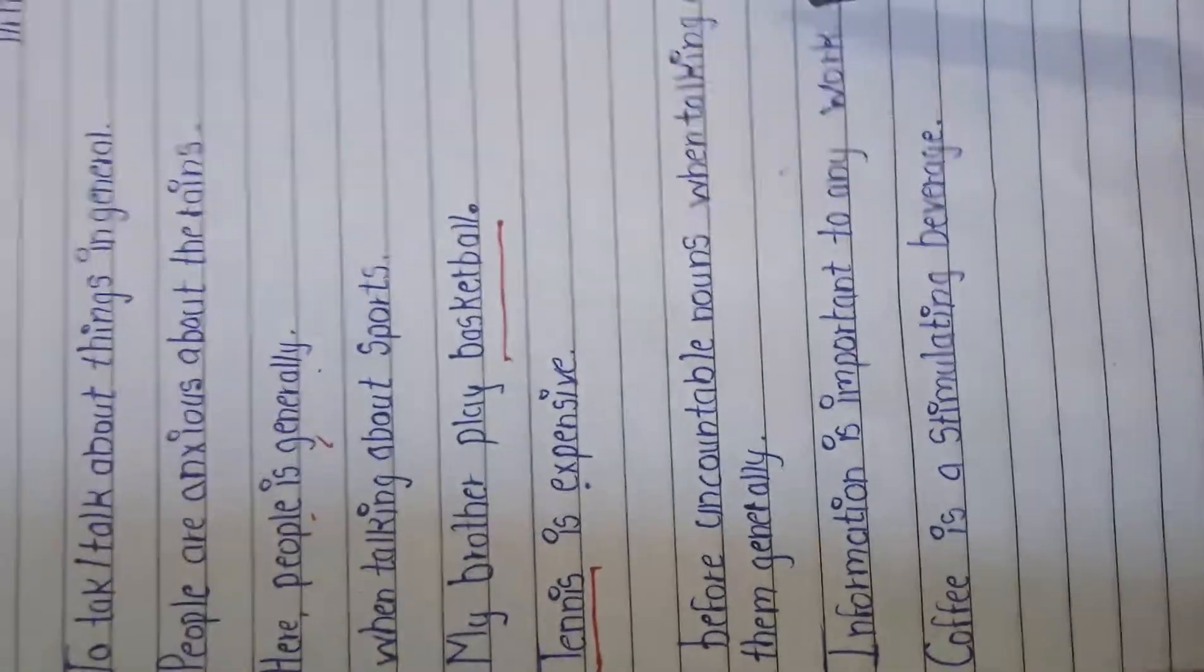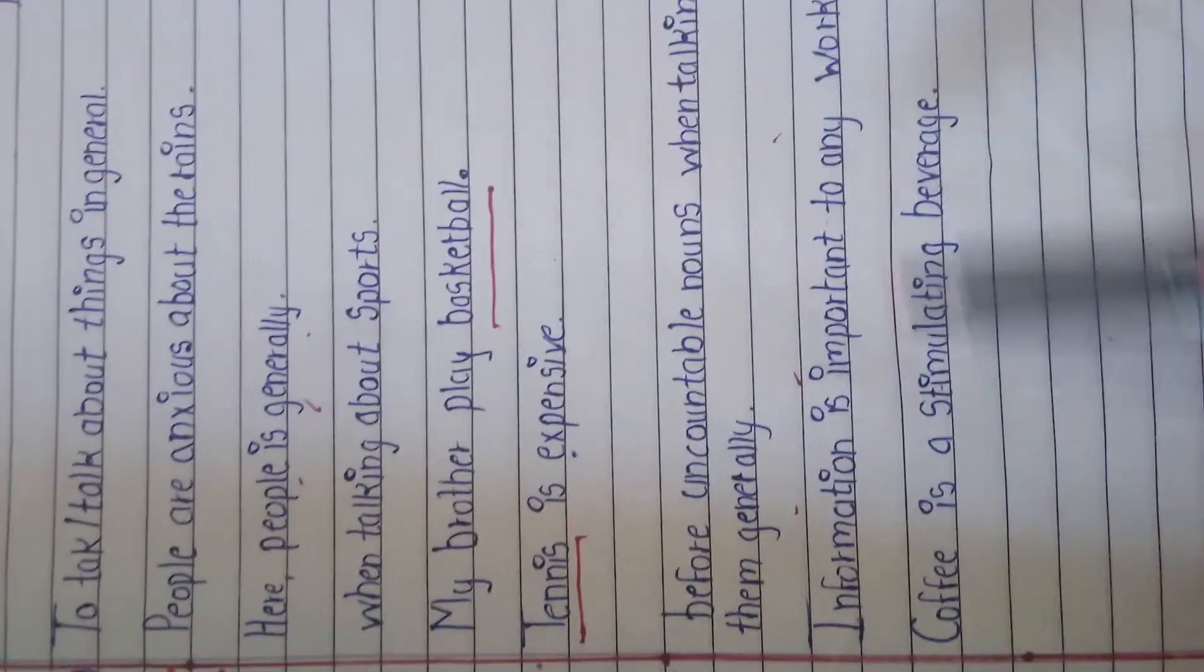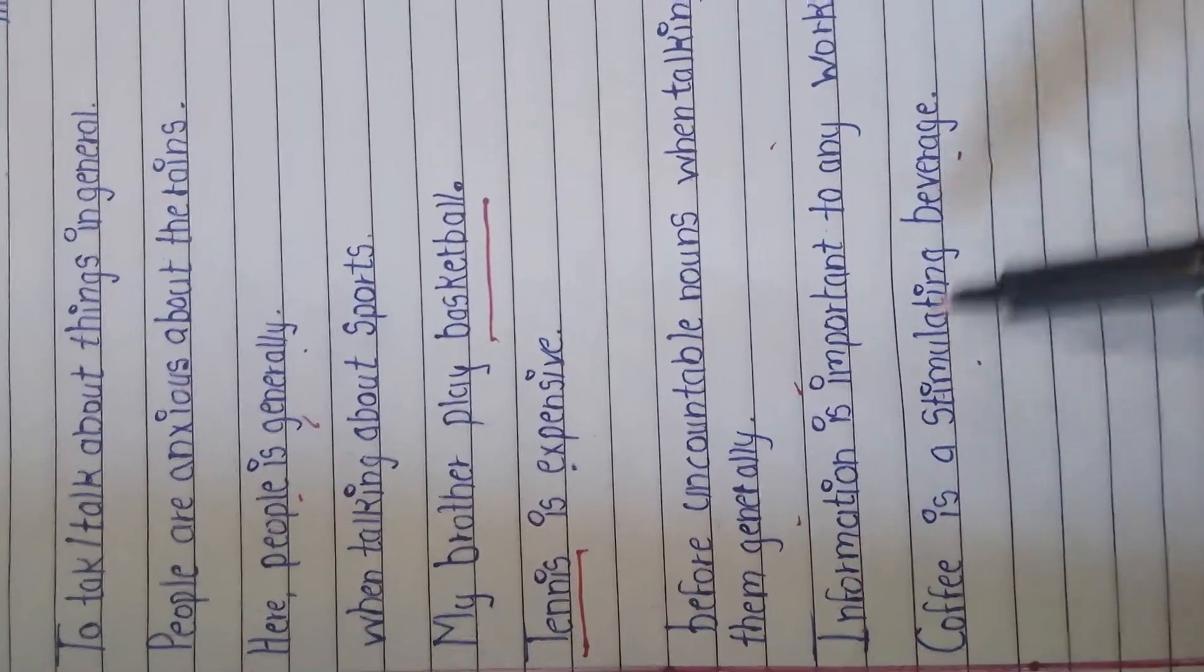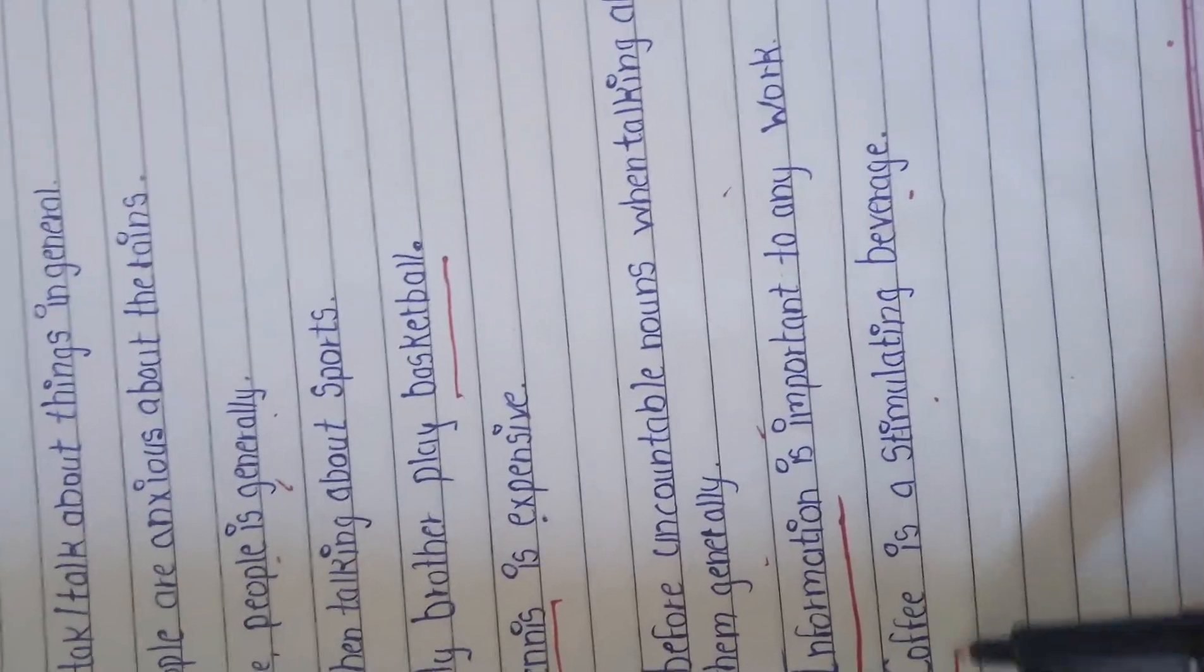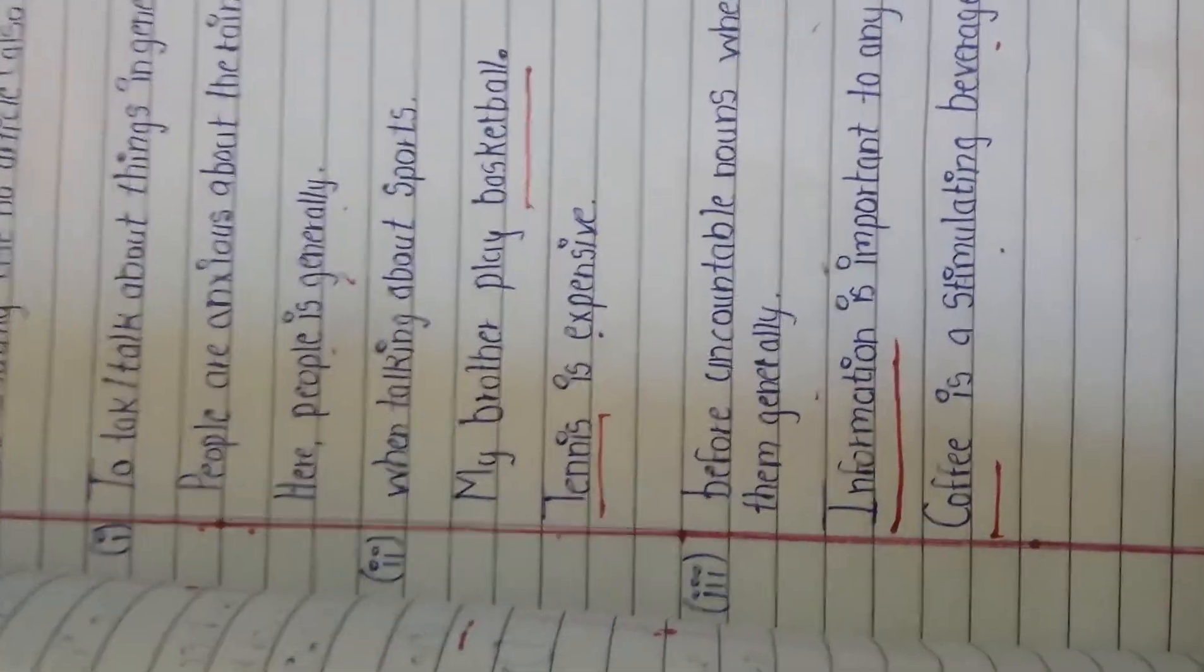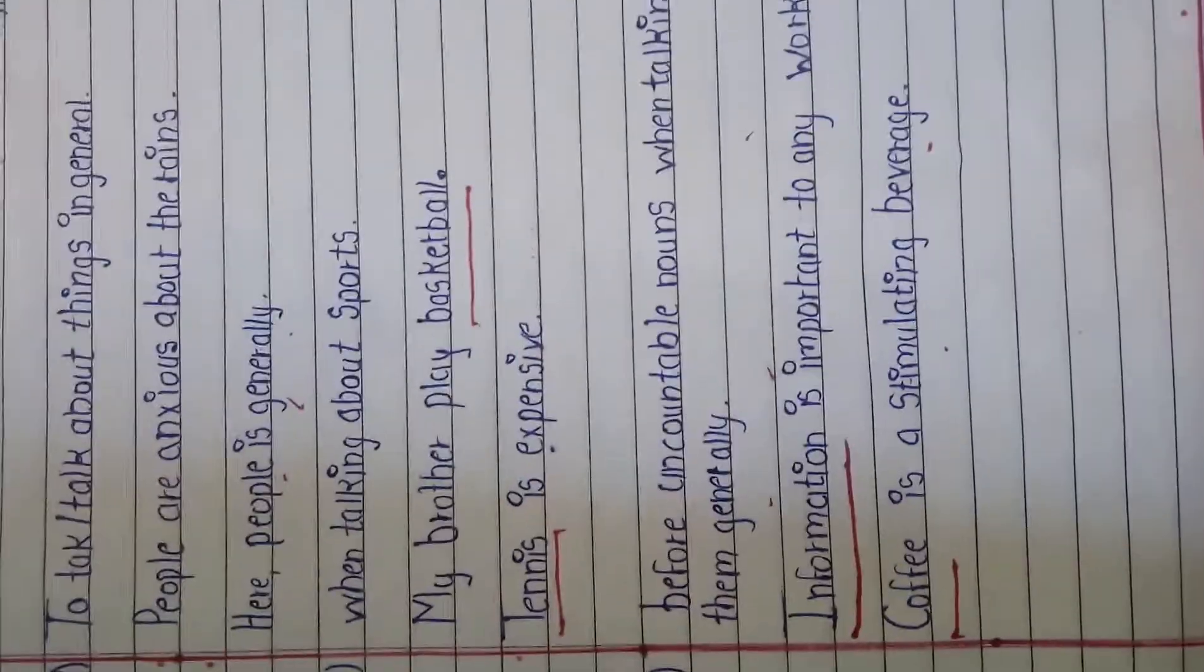Before uncountable nouns, when talking about them generally, we use no article. For example: information is important to anyone, or coffee is a stimulating beverage. Information and coffee are uncountable nouns.